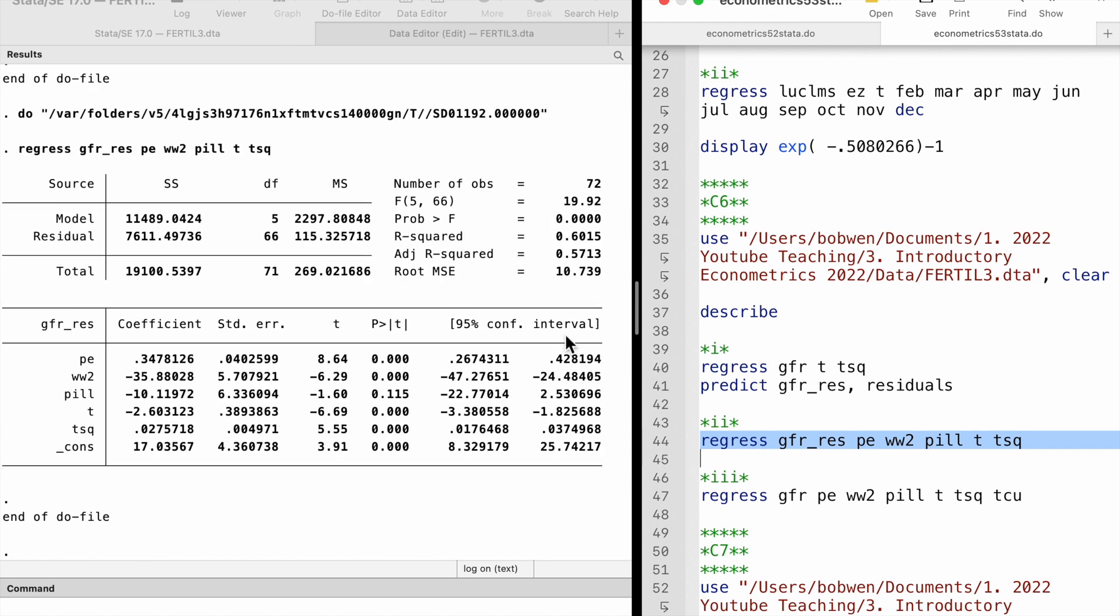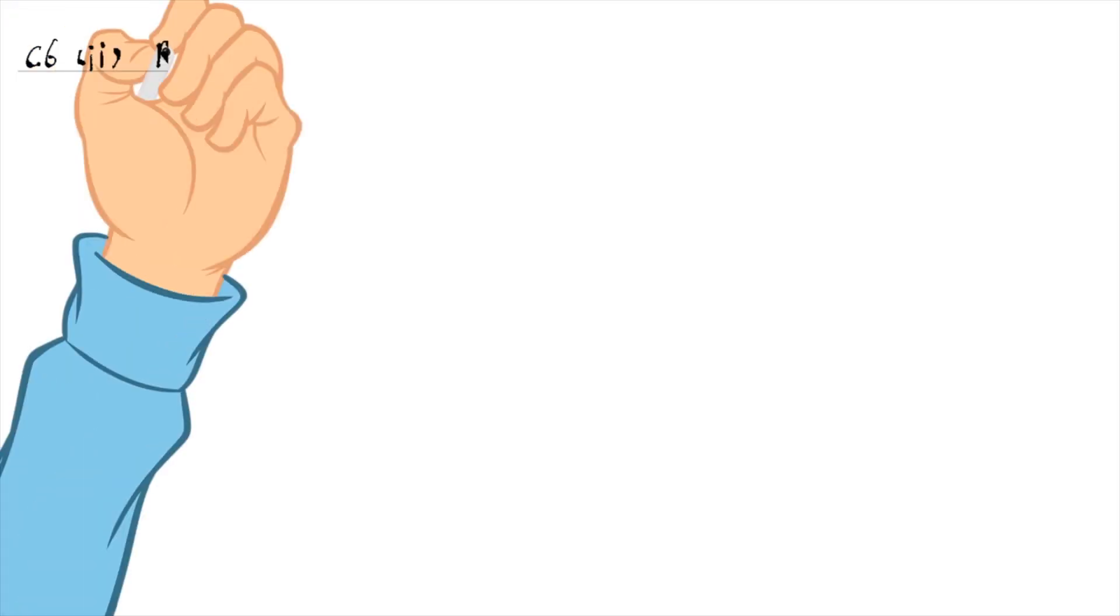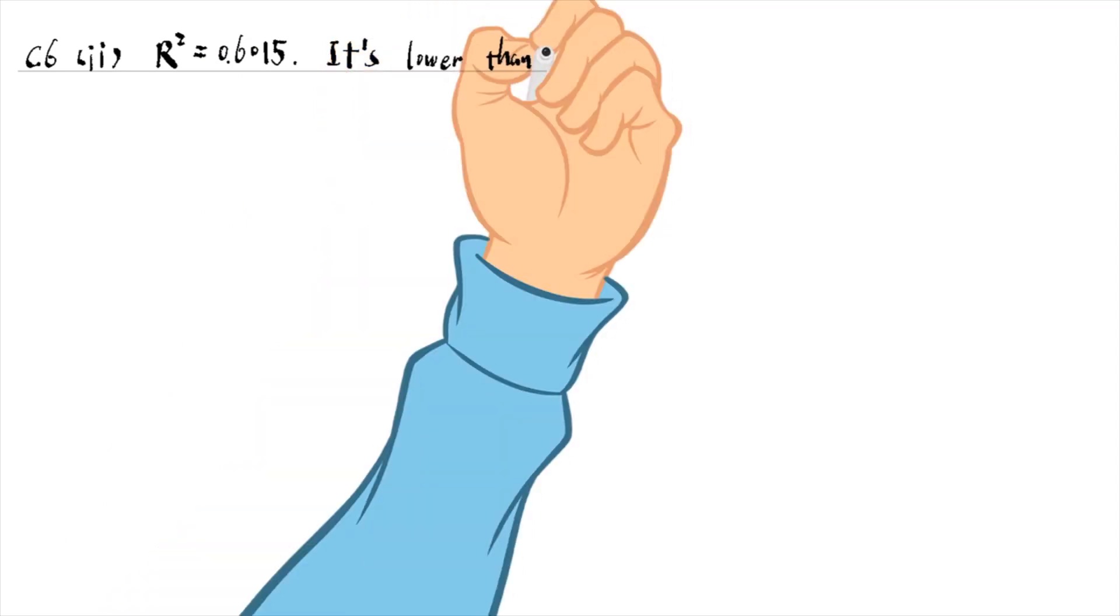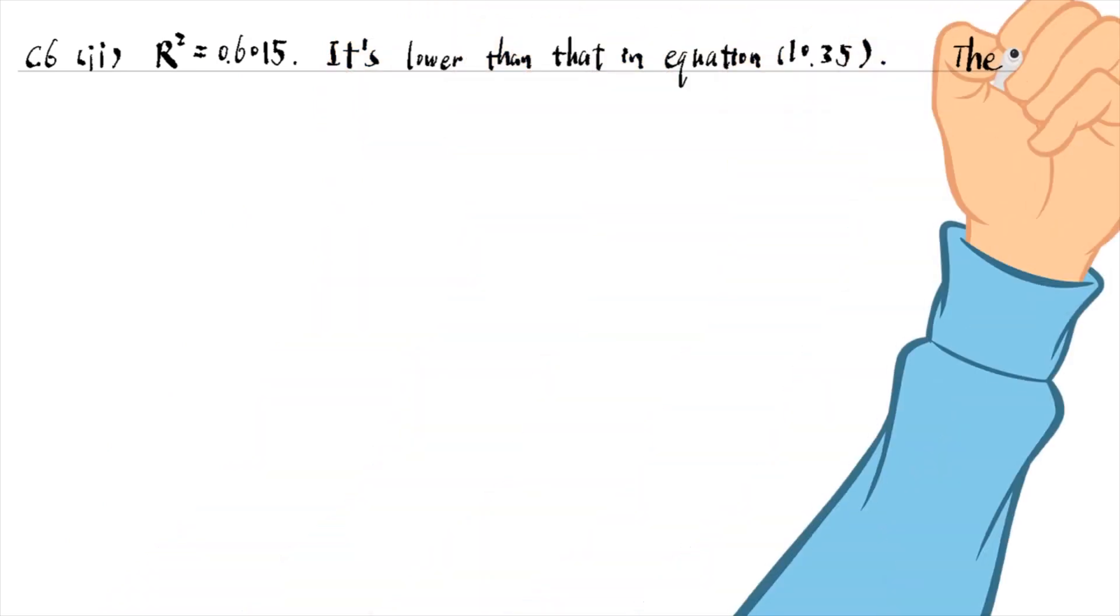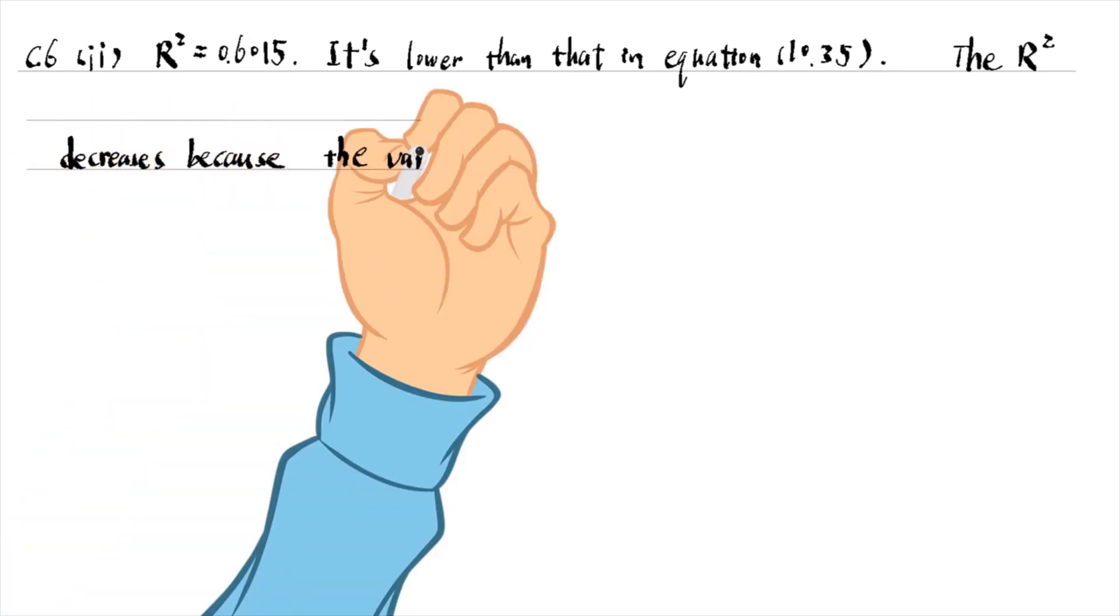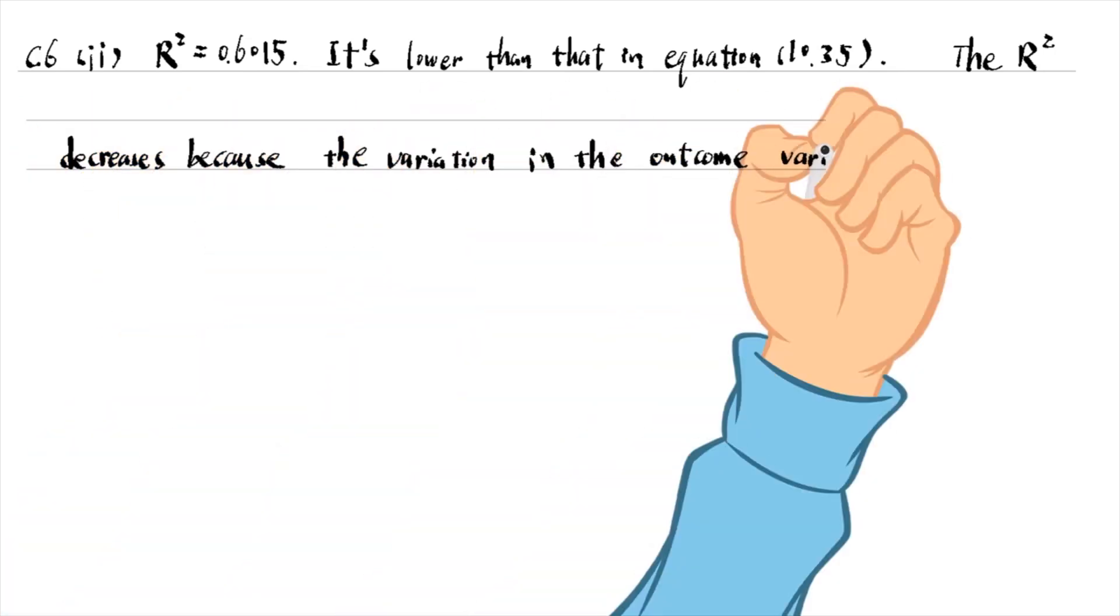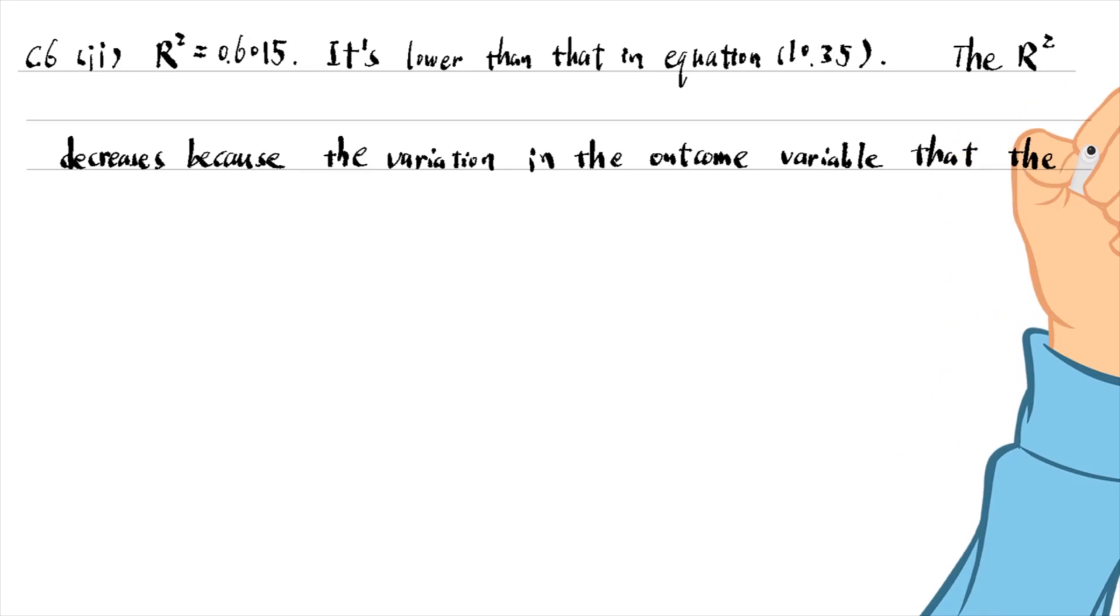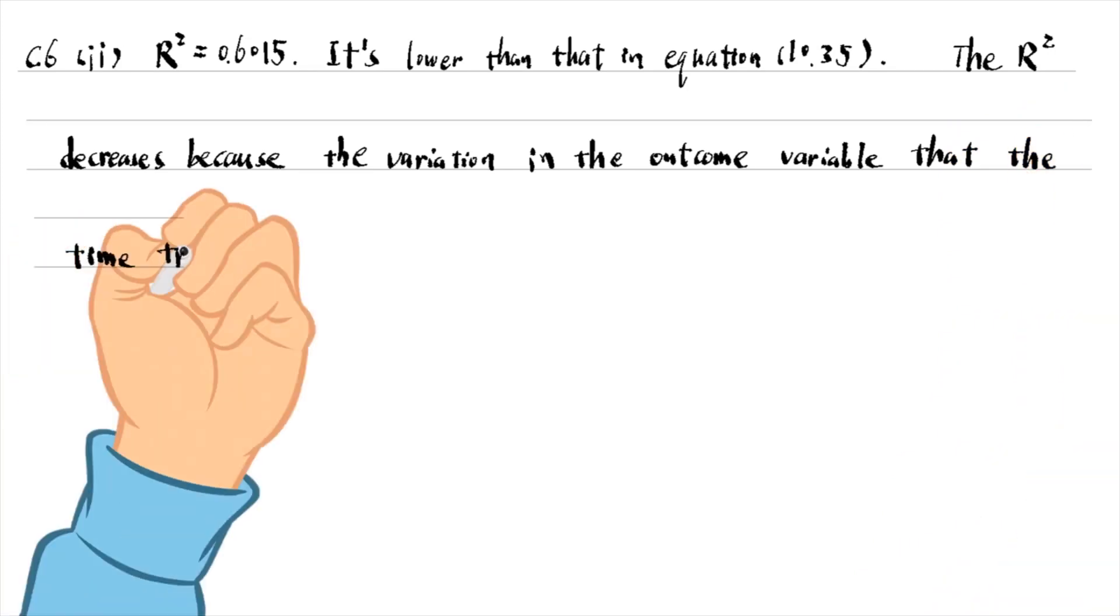The r squared is 0.6015. It is lower than that in equation 10.35 in the textbook. The r squared decreases because the variation in the outcome variable that the time trend can explain has already been taken away by the first regression.